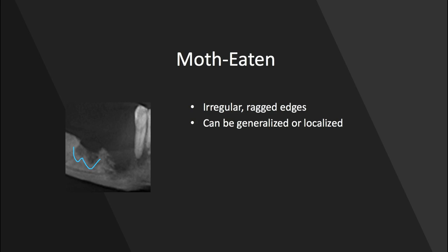We can also have a moth-eaten radiolucency. In this case, it's hard to trace — these edges are ragged and irregular — and moth-eaten is a pretty appropriate description. They can be generalized and affect a wide portion of the mouth, but in this case it's more localized to one specific region.